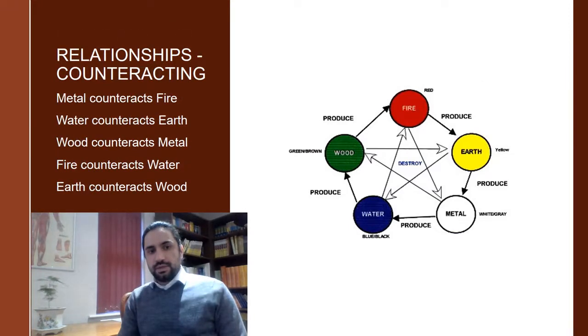As we carry on discussing the second abnormal or pathological relationship between the five elements, we can look at, again, the relationship of control. The counteracting is a reversal of this control. Instead of wood controlling earth, earth is, in this example, too strong and wood cannot interact, cannot interfere with its activity because it's too weak.